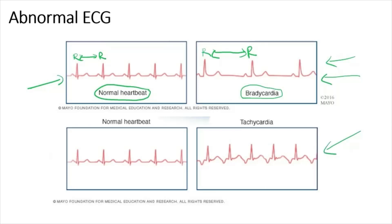The next diagram shows a tachycardia ECG. Tachycardia is the condition where the individual has a heart rate more than 100 beats per minute. In a tachycardia ECG, the distance between the R-R interval is shorter compared to a normal ECG. Tachycardia is produced when the SA node discharges electrical impulses faster than usual, or when electrical impulses in the atria and ventricles spread abnormally, causing inefficient contractions that disturb the impulses from the SA node.